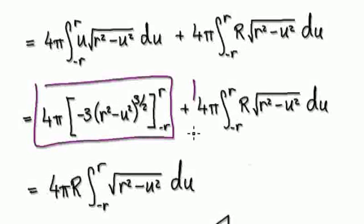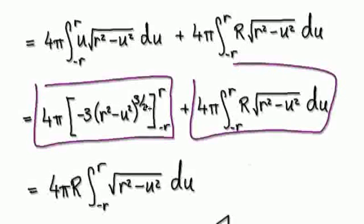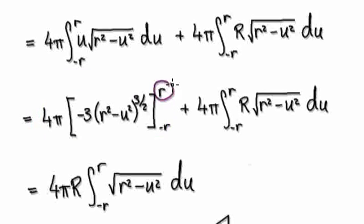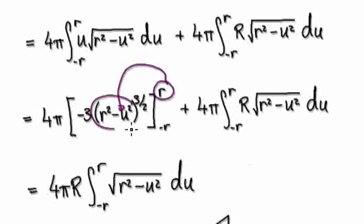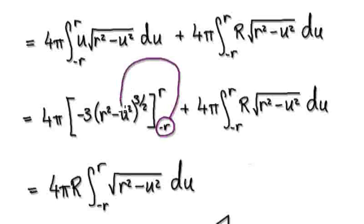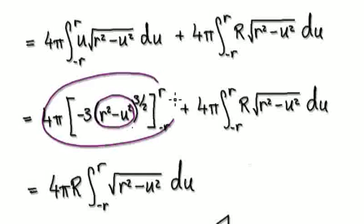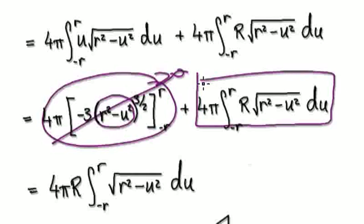We are evaluating both integrals separately. If you evaluate the first one, it gives you zero. Because if you put r into the u here, this thing would be zero, so the whole thing is zero. And if you put negative r in, when you square it you get r squared, meaning this whole thing is also zero. So the first integral evaluates to zero.